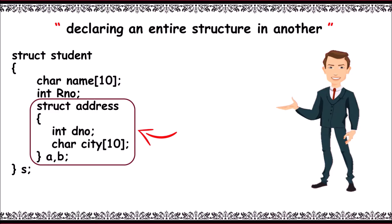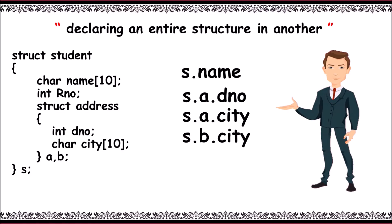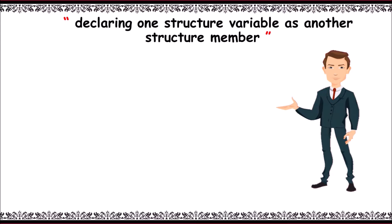To access a member, we write variable name dot member name — that is, 's.name'. To access student s's address a's dno, we write 's.a.dno'. To access city of a, we write 's.a.ct'. To access city of b, we write 's.b.ct'.